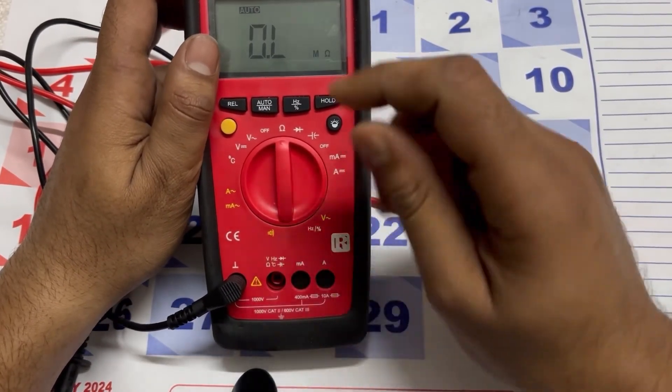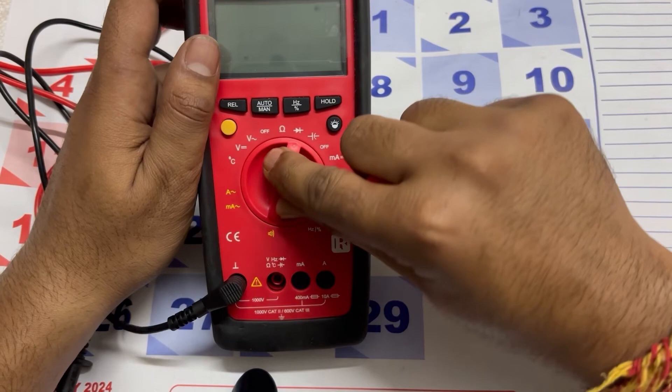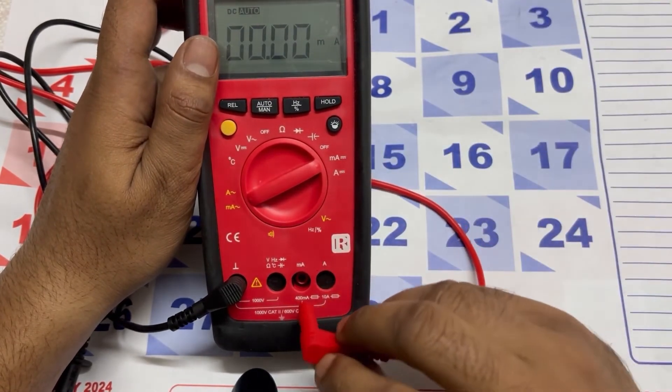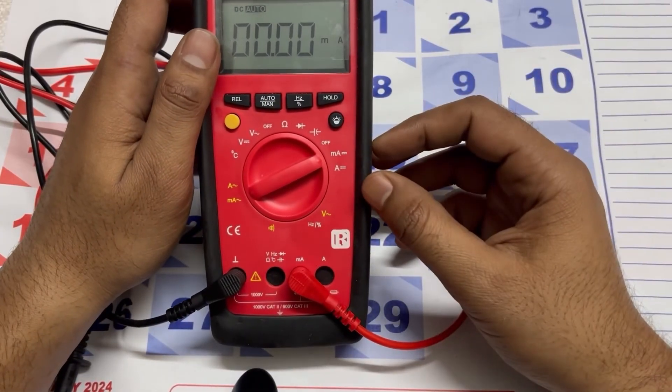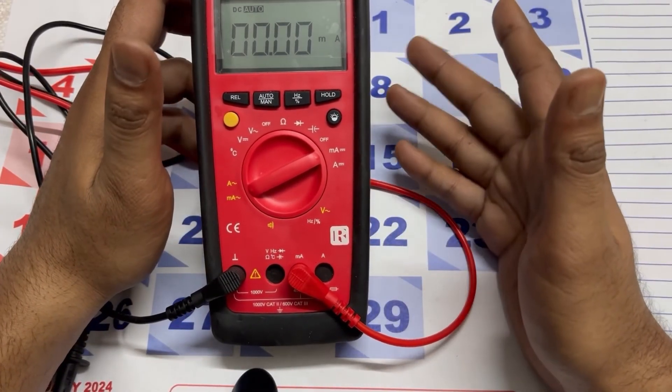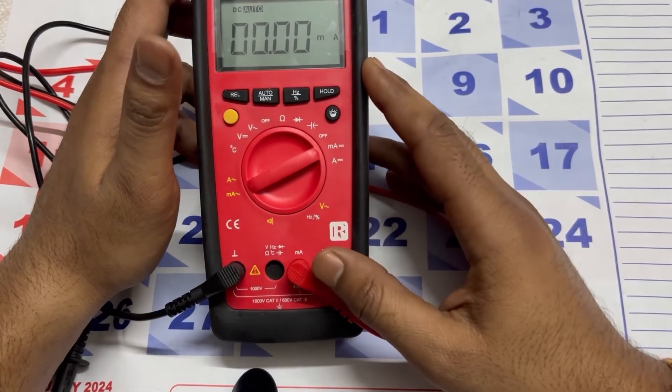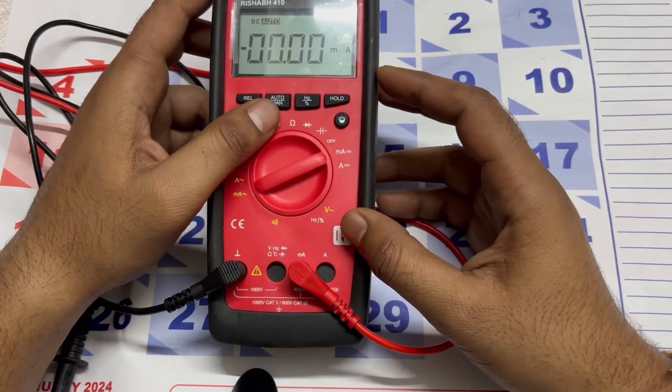For checking milliamps, you have to pull out the probe and then change the selector switch to milliamp. After that you can set the probe here and check milliampere. Milliampere checking is the most important role in instrumentation. Hope you're enjoying the video. If you like the video, please share and subscribe to my YouTube channel. Thanks for watching.